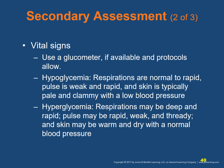Overall comparison: in hypoglycemia, respirations are normal to rapid, pulse is weak and rapid, skin is pale and clammy, and blood pressure is low. In hyperglycemia, respirations may be deep and rapid, pulse may be rapid and weak/thready, skin may be warm and dry, and blood pressure is normal.